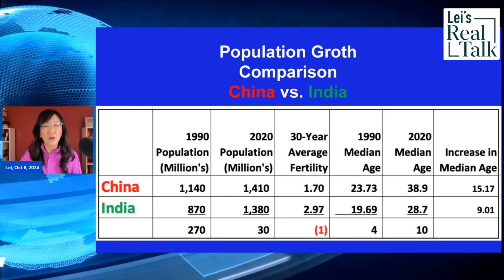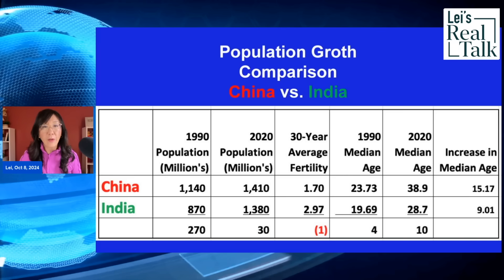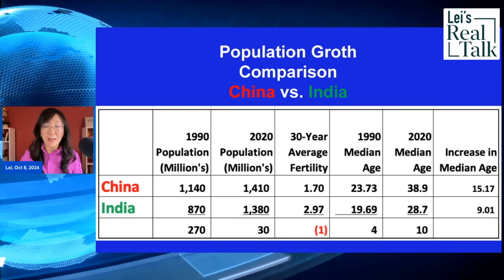Both countries have seen median age increase over the years. In 1990, both were young countries with average ages of 20 and 24. But over 30 years, China grew much older — the increase in median age is 15 years, whereas India only increased by 9 years. When you look at these numbers, you might not see a problem. But mathematically, we know there is one. With that kind of fertility rate in India, consistently over 30 years, India's population should be larger than China's. Mathematically, it's impossible that China's population is still greater.